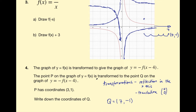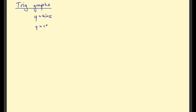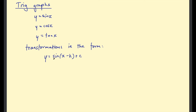Let's look at trigonometric graphs. The three graphs you need to know are y equals sine of x, y equals cosine of x, and y equals tan of x. You need to know what these look like, how to plot them, and how to transform them. Transformations are generally written in the form y equals sine of (x take k) plus c, where k is typically in degrees such as 90 or 180, and this applies to cosine and tan as well.